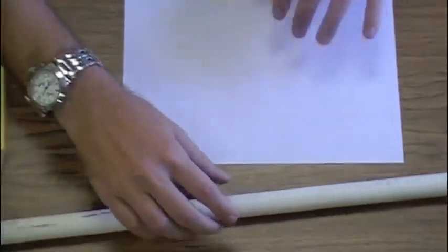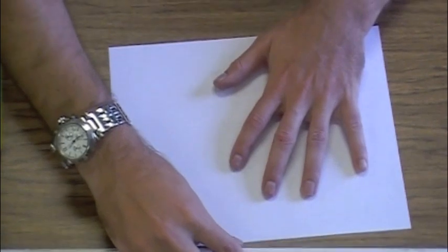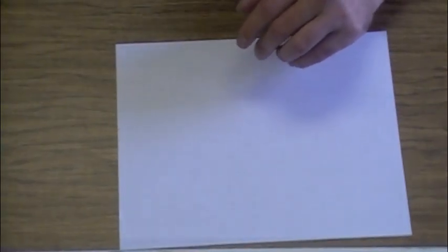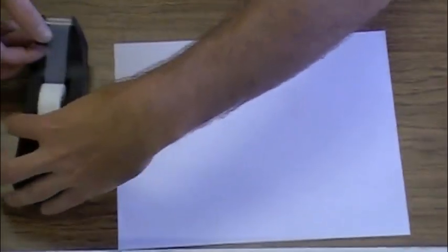We will begin with our needed supplies. First, a half inch PVC pipe. Second, a blank piece of paper. And third, an adhesive. For this demonstration we will be using scotch tape.